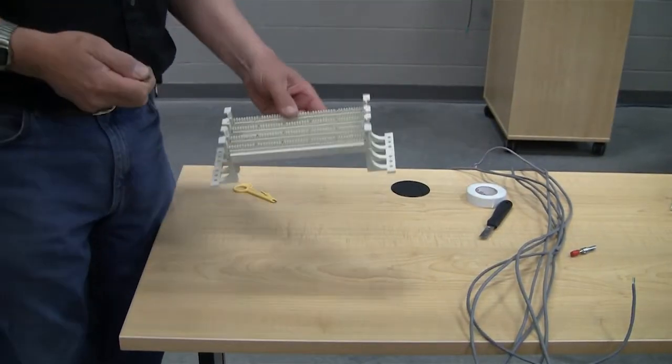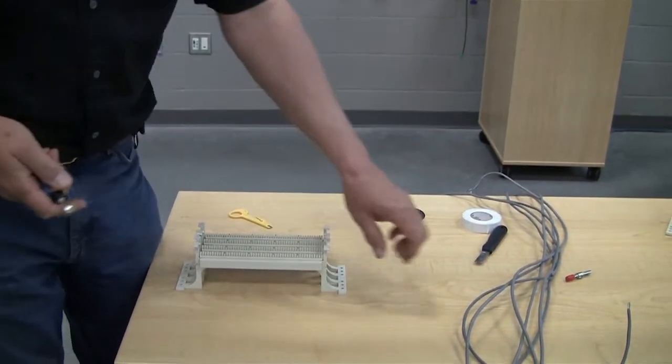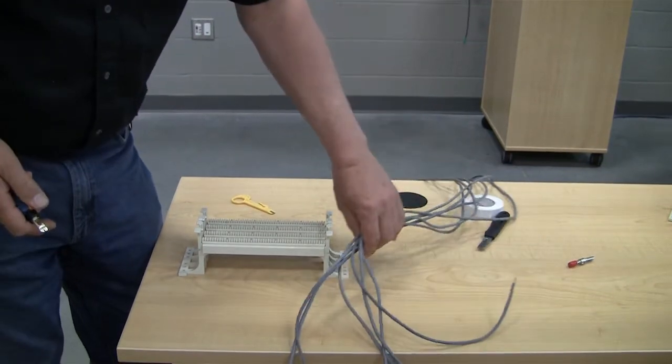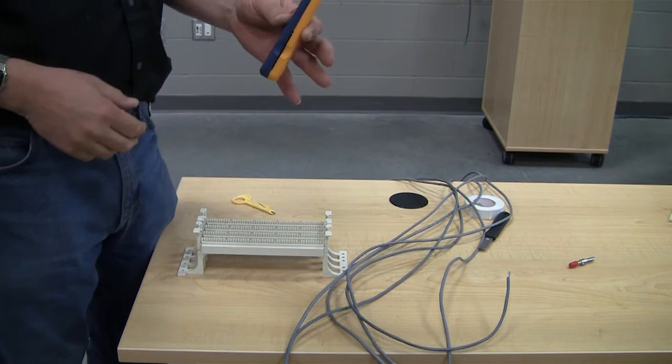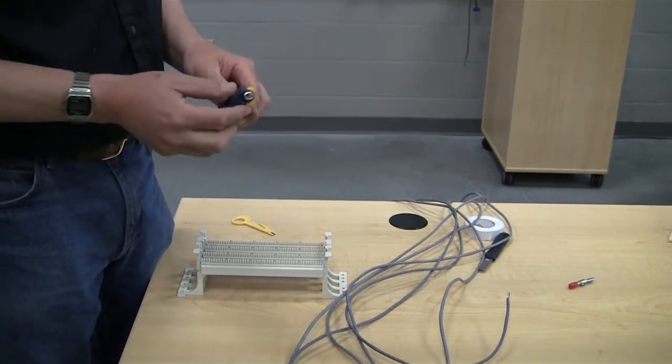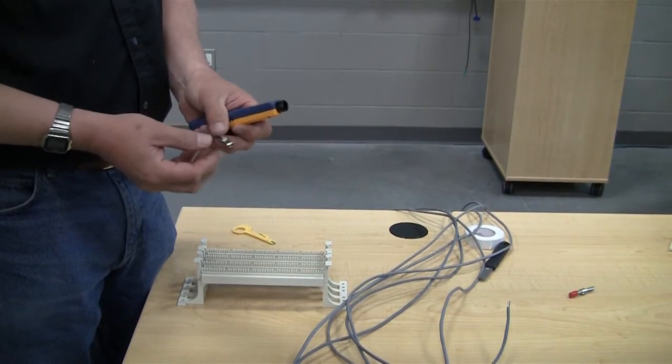Again, we're going to talk about the 110 block. This project we're going to be doing six cat5 cables on the 110 block. We're also going to use the 110 punch down tool with the 110 bit for the tool.